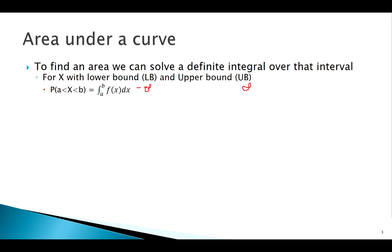What if you want a greater-than probability, say greater than some number a? You integrate from a to the upper bound of that random variable's PDF. What if you want a less-than probability? You integrate from your lower bound up to the number b of that PDF.